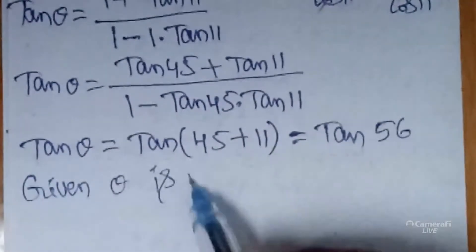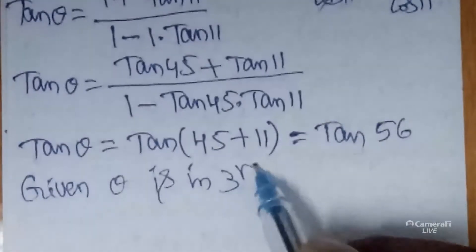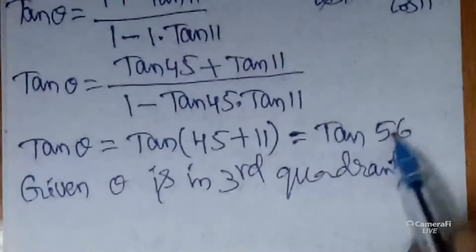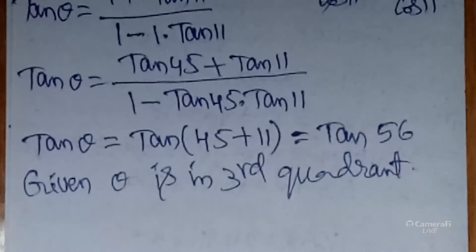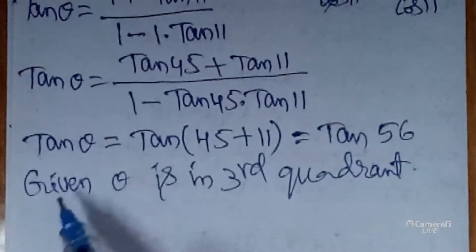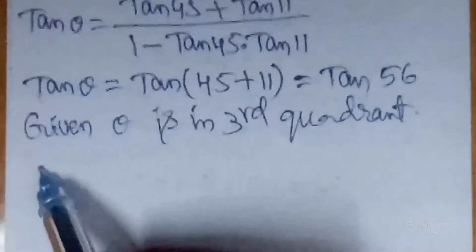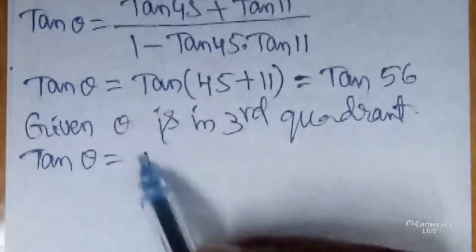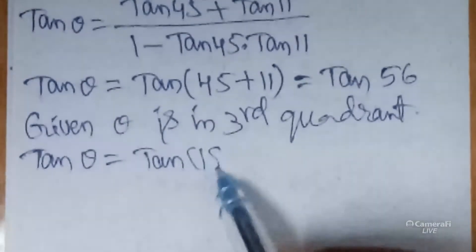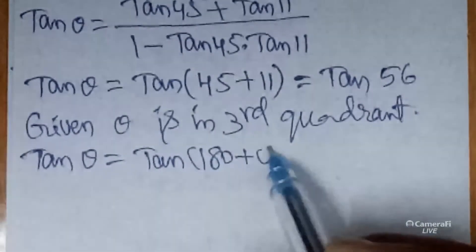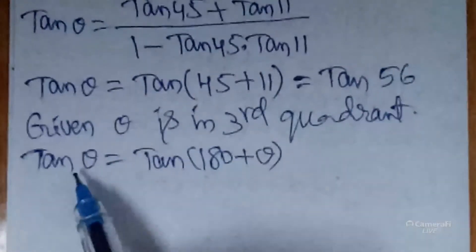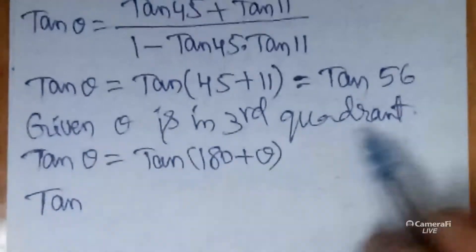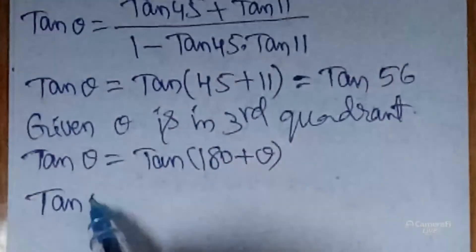The given question states that θ is in the third quadrant. Third quadrant means 56° is not in the third quadrant — 56° lies in the first quadrant only. So according to that, tan θ equals... we can use the identity tan(180 + θ). According to this formula, we want to use θ = 56°.